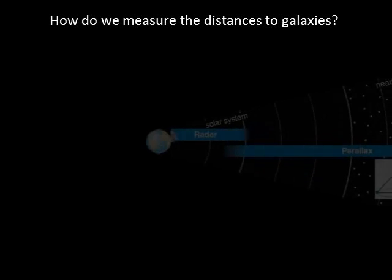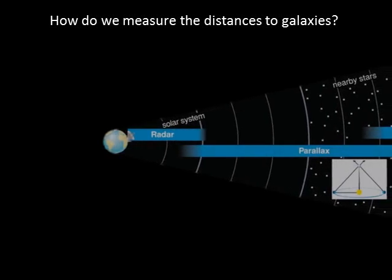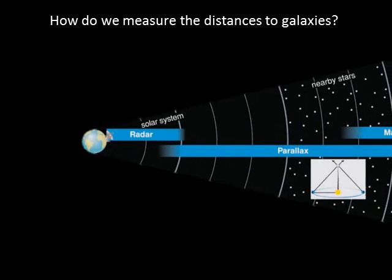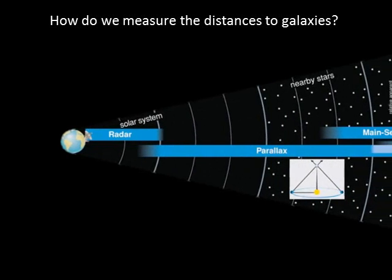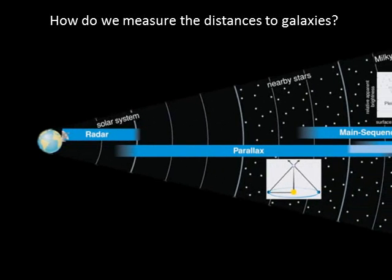Therefore, radar ranging measurements of the astronomical unit represent the first link in the distance chain, and parallax measurements of distances to nearby stars represent the second link.